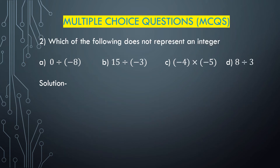Question number 2: Which of the following does not represent an integer? Option A is 0 divided by minus 8, option B is 15 divided by minus 3, option C is minus 4 multiplied with minus 5, and option D is 8 divided by 3. Integers include positive integers, negative integers, and 0. Option A: 0 divided by any number is 0, which is an integer. Option B: 15 divided by minus 3 — plus divided by minus is minus, and 15 divided by 3 is 5, so it is minus 5, which is an integer.